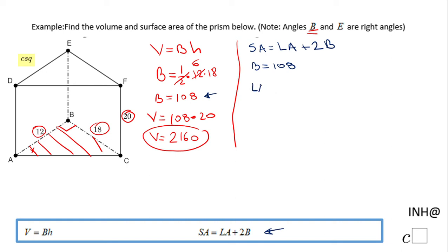Now, let's take a look at the lateral area, and the lateral area here has 3 rectangles. The first one is the one here, EFCB, which is 18 by 20. The second rectangle is the left side of this triangular prism, DEBA, which is 12 by 20 also.